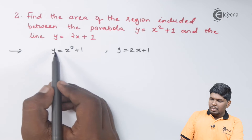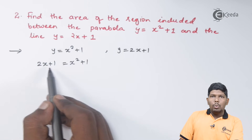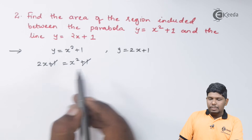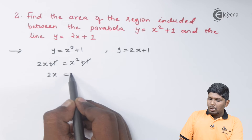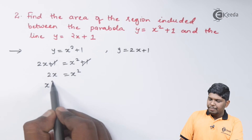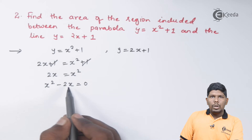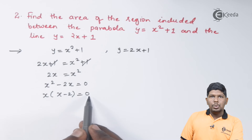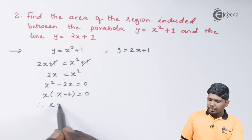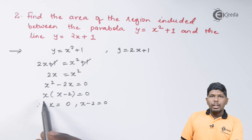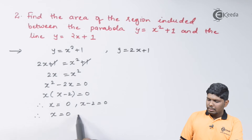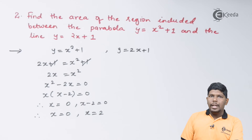Substituting y equals 2x plus 1 into the parabola gives 2x plus 1 equals x squared plus 1. The ones cancel, leaving 2x equals x squared. Taking 2x to the right side gives x squared minus 2x equals 0. Factoring out x: x(x minus 2) equals 0, so x equals 0 or x equals 2.